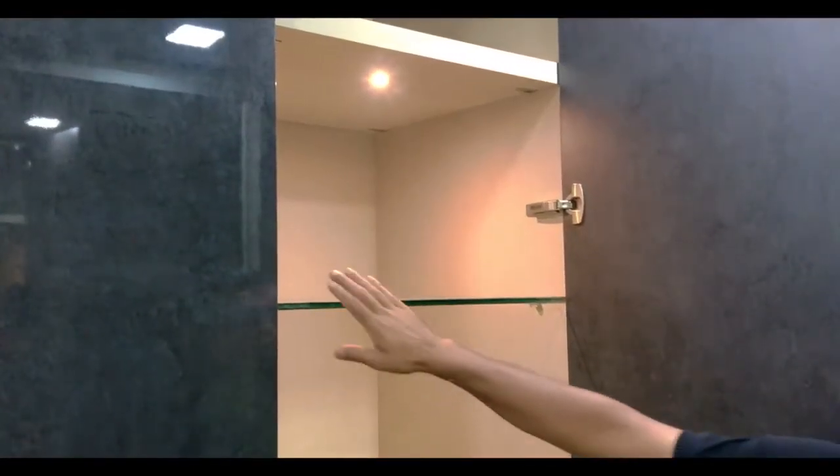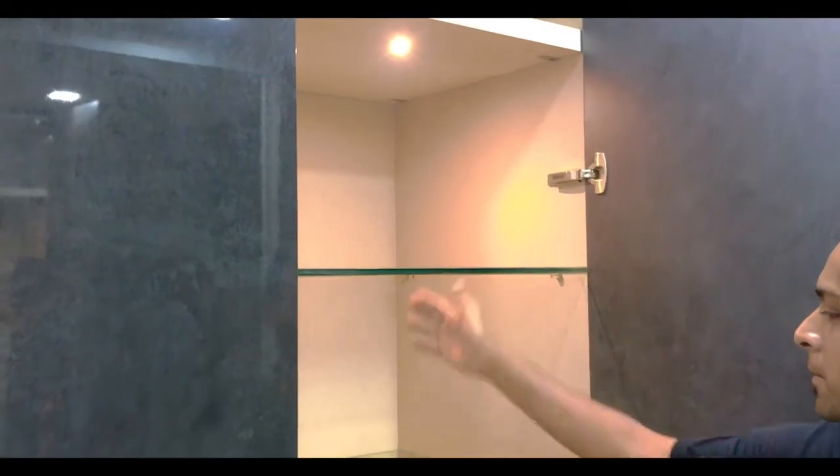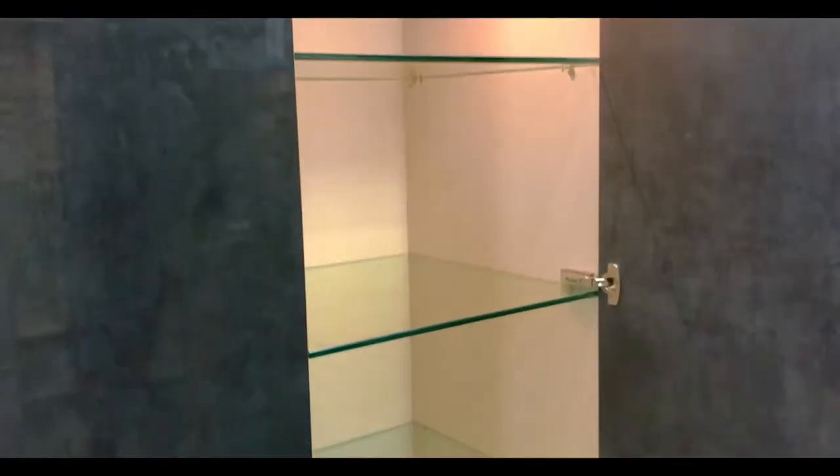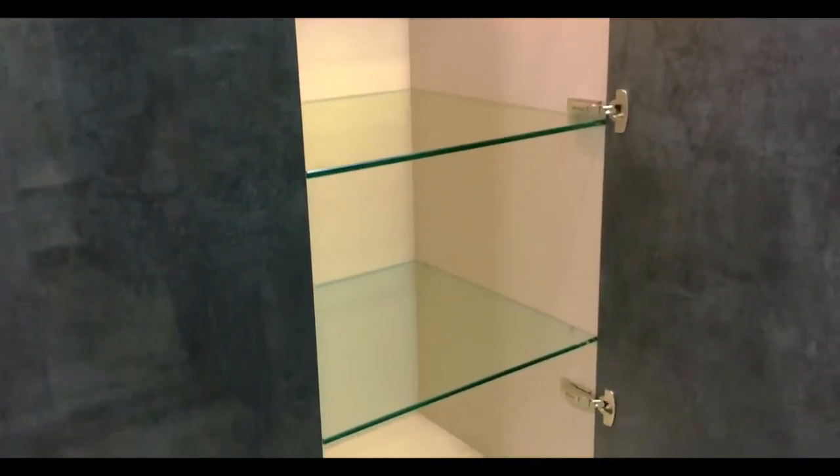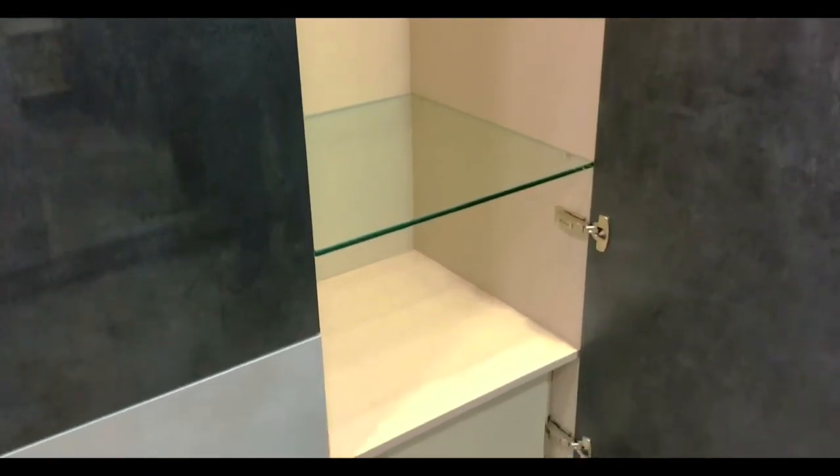The last section of the hinge wardrobe has a storage space at the top with a spotlight below. This section also features glass shelves as an option with an internal drawer at the bottom.